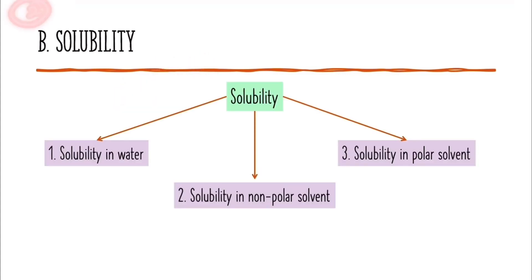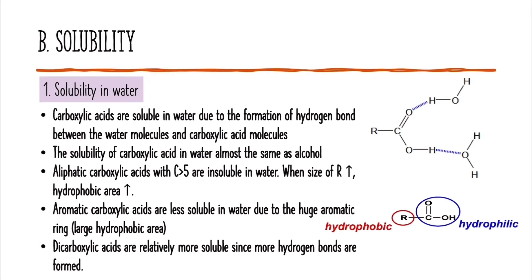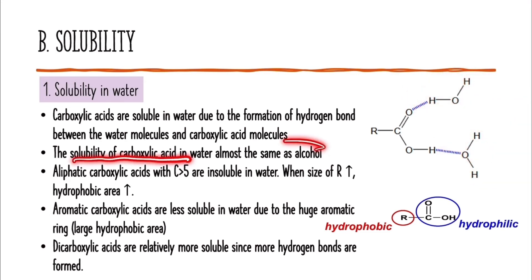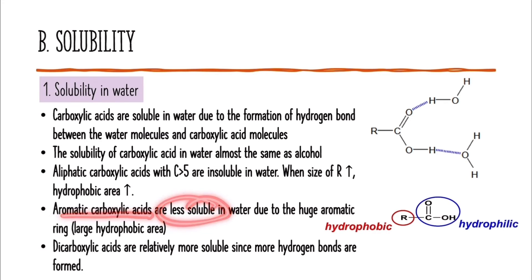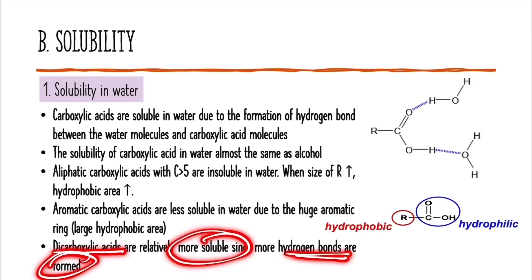The second physical property is solubility, divided into three categories. First, solubility in water: carboxylic acids are soluble in water due to the formation of hydrogen bonds between water molecules and carboxylic acid molecules. The solubility of carboxylic acid in water is similar to that of alcohol. However, aliphatic carboxylic acids with more than five carbons are insoluble in water because as the size of the R group increases, the hydrophobic area also increases. Aromatic carboxylic acid is less soluble in water due to its large aromatic ring and large hydrophobic area. Dicarboxylic acid is relatively more soluble since more hydrogen bonds are formed.